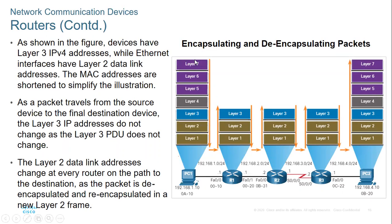The message goes down the OSI model — the ones and zeros are changed into signals. When the router receives the packet, it starts moving back up. Going down is encapsulation — adding headers — while coming up is decapsulation. At layer two, we open the packet and look for the MAC address, then move up to layer three to look for the IP address.